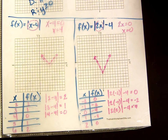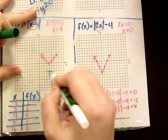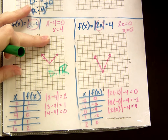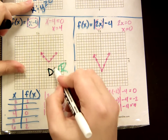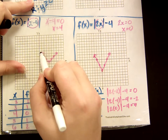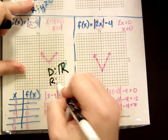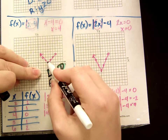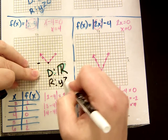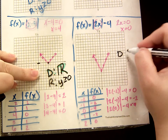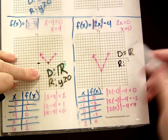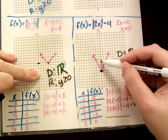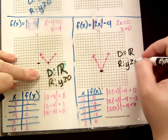Now, domain and range. For the first example — absolute value of x minus 4 — domain is all real numbers because it goes left and right forever. The range: your y's don't go below 0, so they're all greater than or equal to 0. On the second example — absolute value of 2x minus 4 — domain is still all real numbers. But the range is different: the lowest your y values go is negative 4, so y greater than or equal to negative 4 is your range.